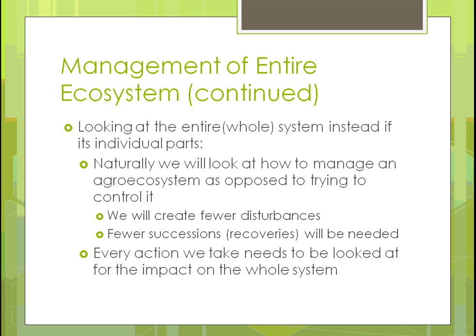Looking at the whole system instead of individual parts, we'll look at how to manage it so it works as a whole. We're going to try to manage it so we're working less — not trying to control things, but letting them naturally happen. To do that, it's believed we have to create fewer disturbances: don't disturb the land as much, don't let the animals eat away too much of the pasture land — move them around instead. Fewer successions or recoveries means the ecosystem doesn't have to spend as much energy getting back to its natural state.